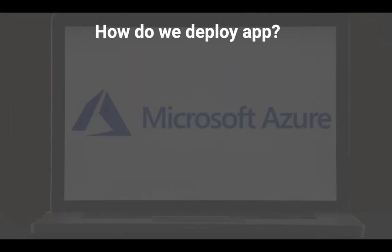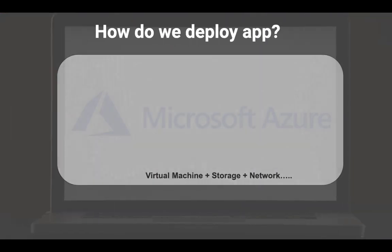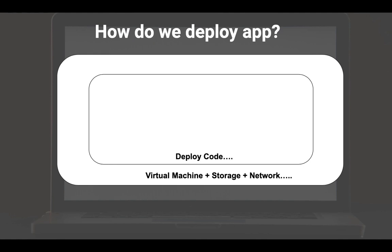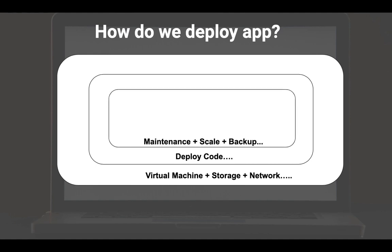Before getting to the definition, let's talk about how we deploy applications generally. As an infrastructure or systems engineer, you take care of the underlying infrastructure first — the virtual machine, SSDs, storage, network setup, firewall, and proxy — making sure your network is highly stable and secure. Once that's done, you take care of deploying the code, either manually or via automated CI/CD, which takes a fair amount of time. The application could be .NET, Java, or anything.